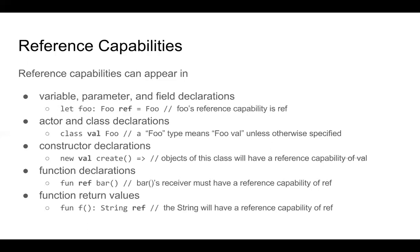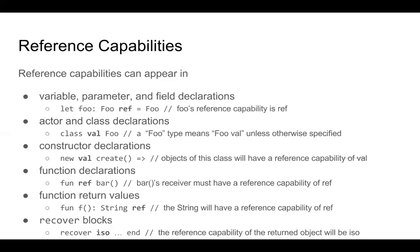Recover blocks give you a way of saying: within the recover block, I'm going to create an object with a certain reference capability, and once returned from the recover block, that object will have a more restrictive reference capability. You can use recover blocks to, for example, take a ref, do some things with it, and get it back outside the block as an ISO. If no reference capability is specified, the default for the given object is used. By default, classes have a reference capability of ref.